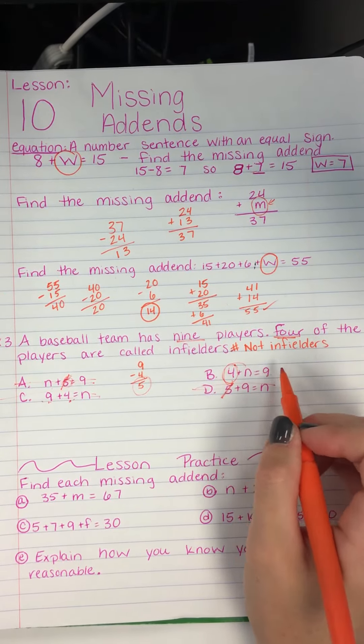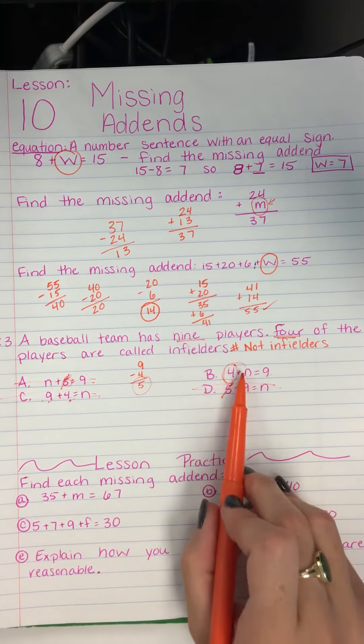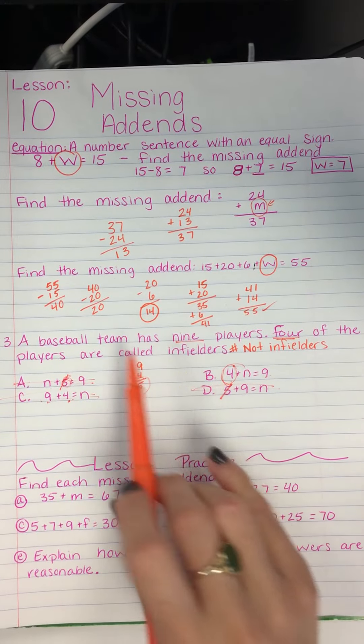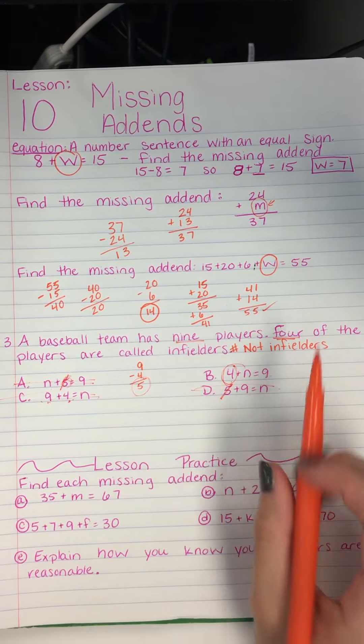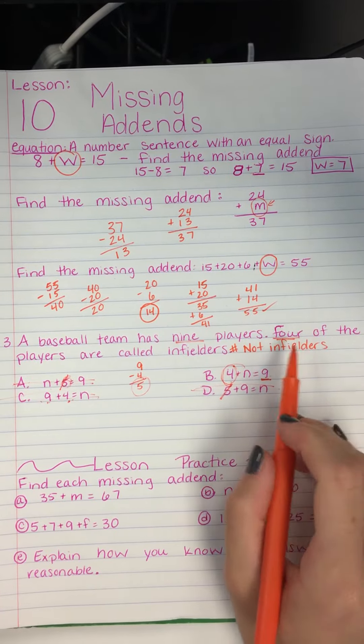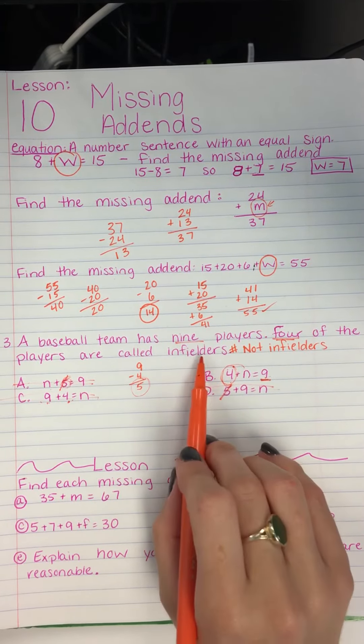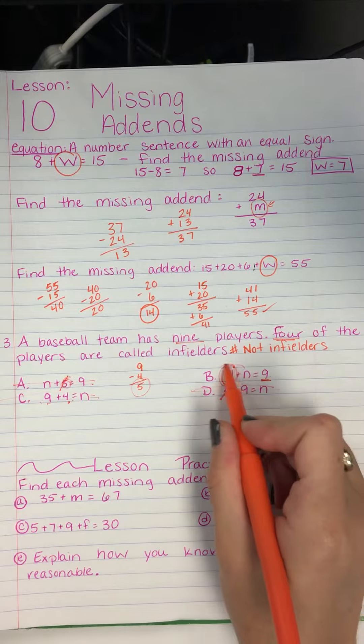4 plus 5 equals 9. Yes, okay, we do know that. And let's make sure that this goes with it. A baseball team has 9 players. So, total 9. 4 of the players are called infielders. 4 are infielders.